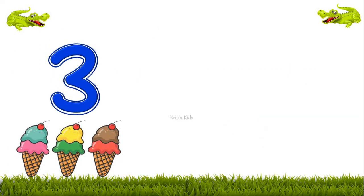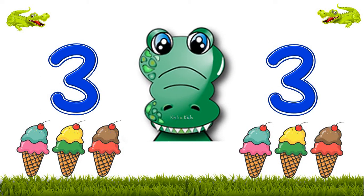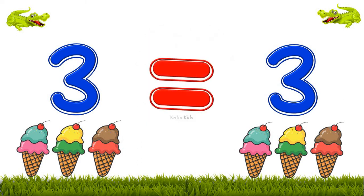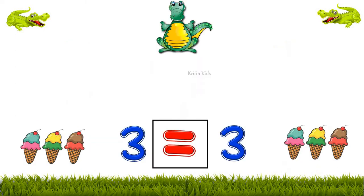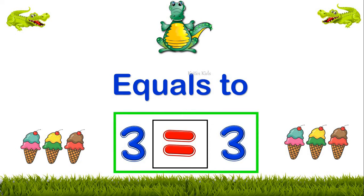Here is an interesting case. Here we have 3 ice creams and on the other side also we have 3 ice creams. Now what will Ali do? In this case, we have one more sign. This sign is called the equals to sign because we have an equal number of ice creams on both sides, and it is read as '3 equals 3.'